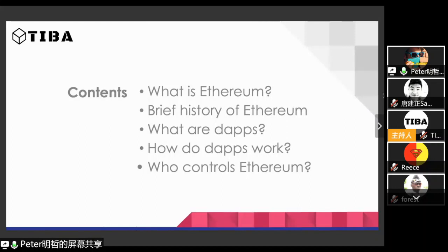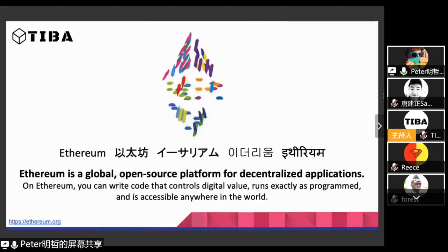Today we will start by discussing what Ethereum is, then talk about the brief history of Ethereum, define what decentralized applications are with some cool examples, and talk about how they work. Finally, we'll talk about something I call blockchain governance — this is a decentralized network not controlled by any single entity, so who actually controls it? Let's start by talking about Ethereum itself and see what they have to say about themselves. I encourage you to check out their website, ethereum.org — I just checked it and it's been updated recently with a lot of cool information.